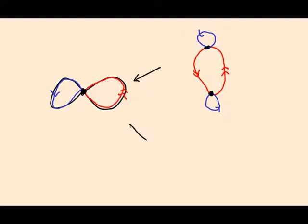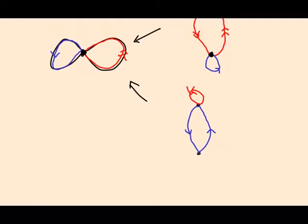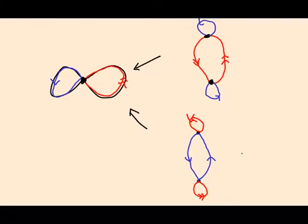Here's another 2-to-1 cover. I could do the same thing but with the red and blue reversed. So these could be blue, these could be red. That gives me another covering space. You might like to think if there are any more 2-to-1 covers for the figure-8. These are the only 2.